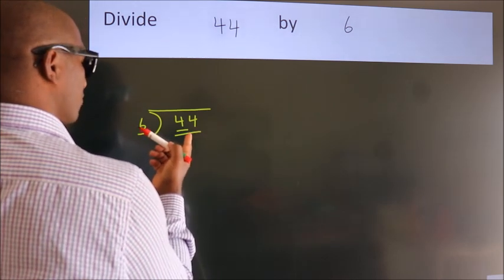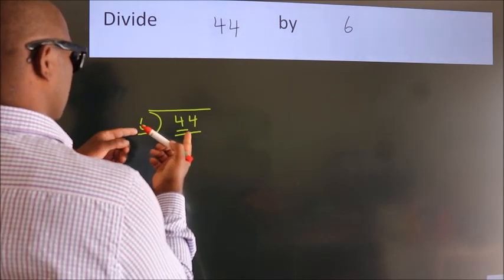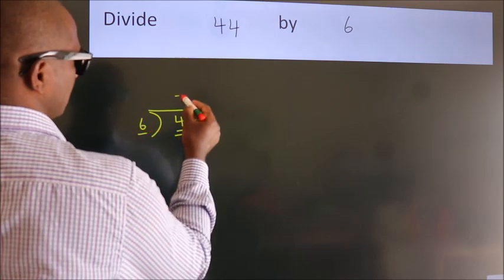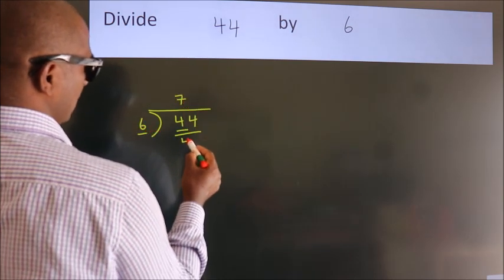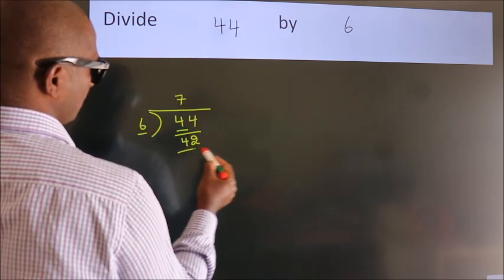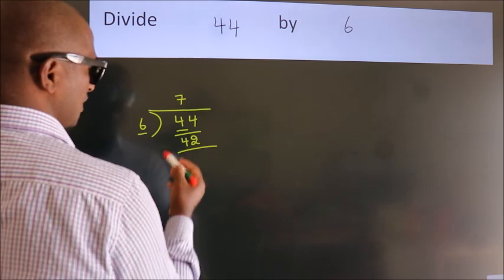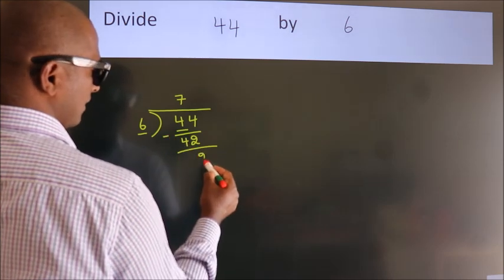A number close to 44 in the 6 table is 6 times 7, which is 42. Now we should subtract. We get 2.